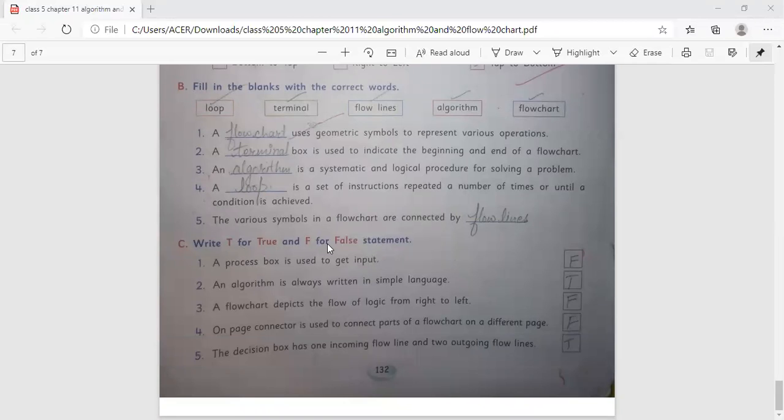Write T for true and F for false statement. A process box is used to get input. That is false. An algorithm is always written in simple language. That is true. A flowchart depicts the flow of logic from right to left. That is false. On-page connector is used to connect parts of a flowchart on different pages. That is false. The decision box has one incoming flow line and two outgoing flow lines. That is true. Thank you.